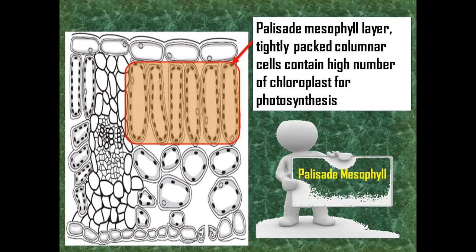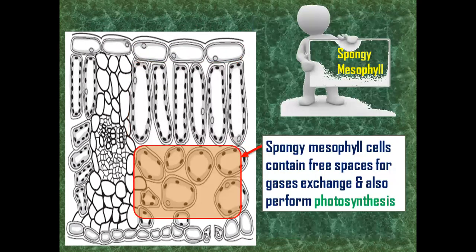Below the palisade mesophyll, we have irregularly arranged cells which are creating a lot of space between them. These are parenchyma spaces between these cells, they are forming spongy layer.